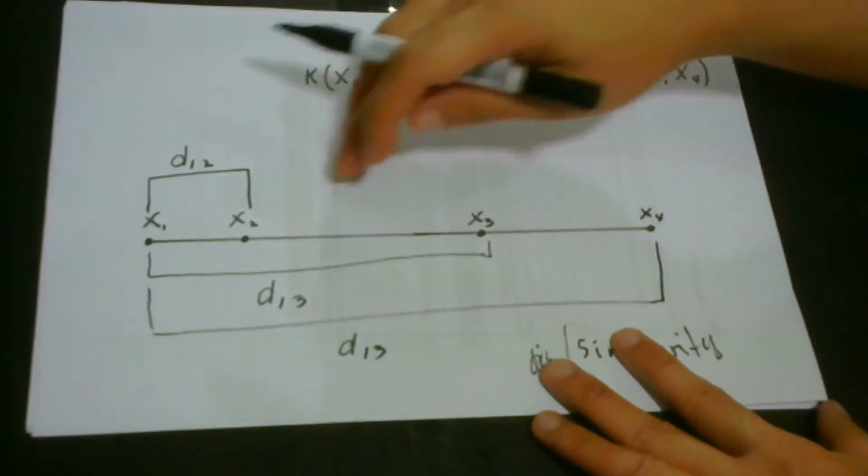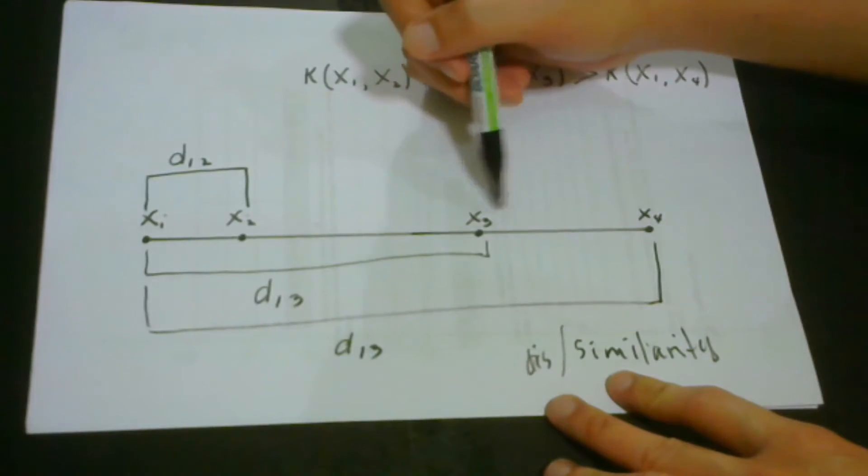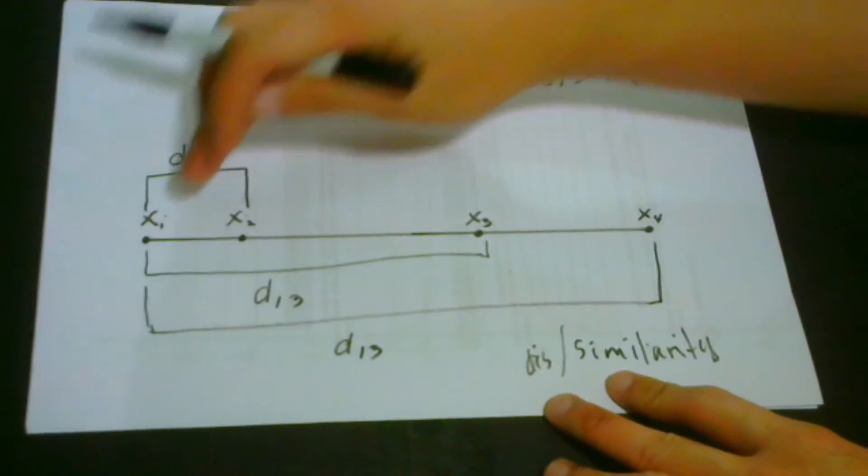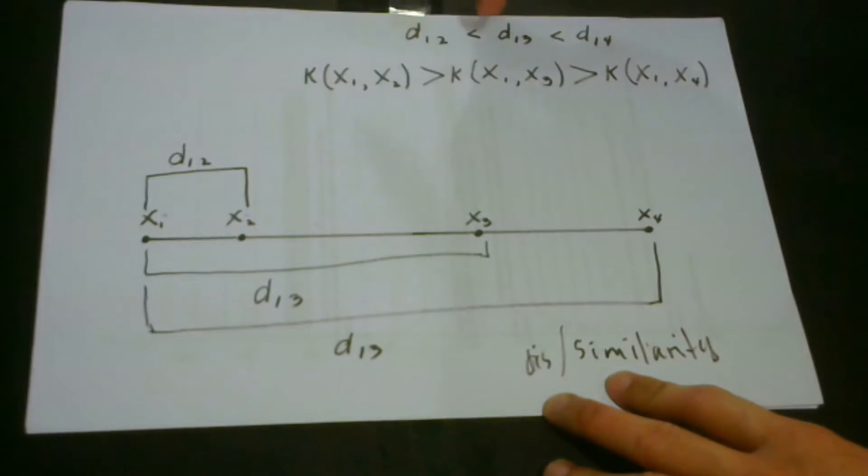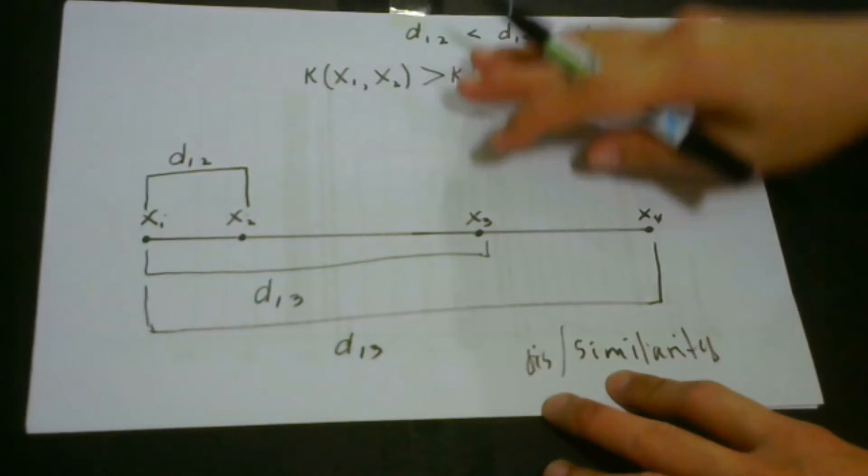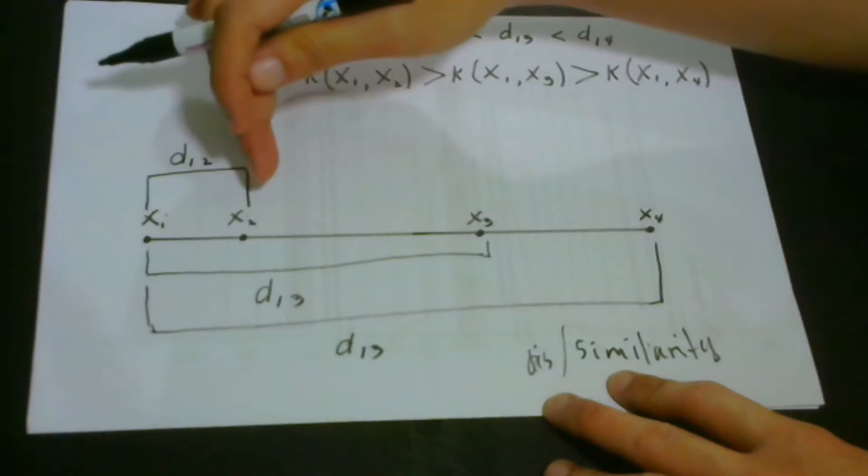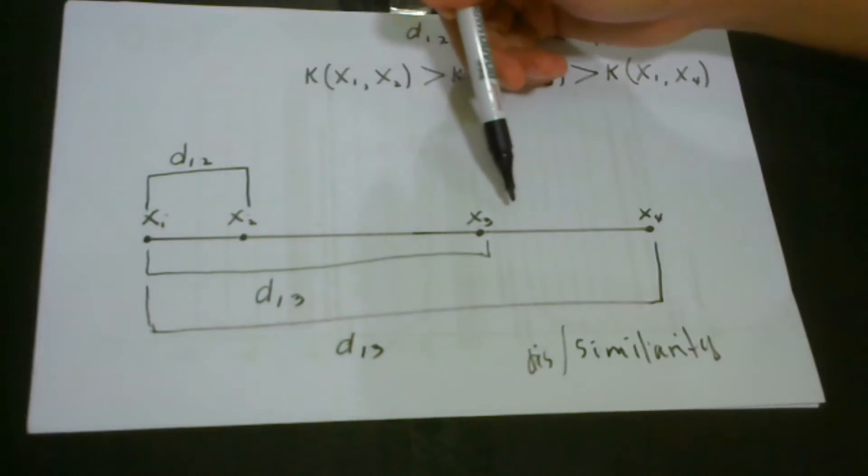This is the distance of x2 from x1, this is the distance of x1 and x3, and this one is the distance of x1 and x4. Just using our naked eye, we could say that the distance d1,2 is less than that of the distance d1,3, and it is less than the distance d1,4. Translating the equivalence of these distances into the kernel, we could say that the kernel of x1 and x2 is greater than the kernel of x1 and x3, which is also greater than the kernel of x1 and x4. As the distance increases, the similarity also decreases.